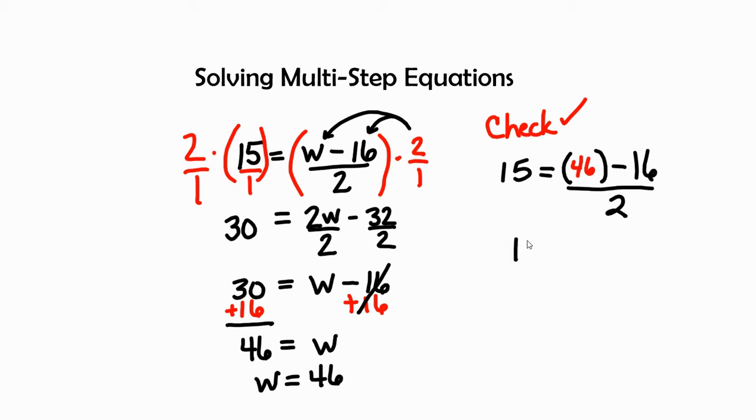So we have 15. Bring it down, keep our equal signs in line. 46 minus 16 is 30 divided by 2. 15 equals 30 divided by 2 is 15. And guess what, you guys? We check. The answer is correct.